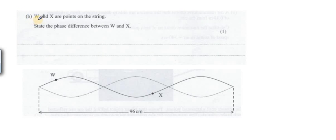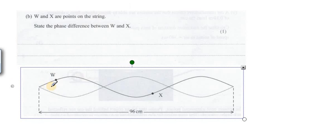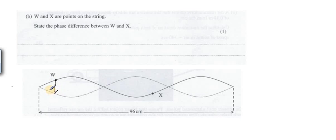Let's see the next part. Part B: W and X are points on the string - state the phase difference between W and X. This is a standing wave and in standing waves the oscillation of the whole loop is up and down. If you see W is coming down and X could be moving up as part of the oscillation of the system. They are moving in opposite directions, so the phase difference between W and X would be 180 degrees or pi radians, because of the exactly opposite motion.